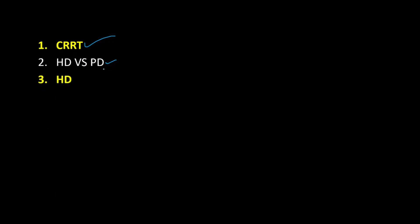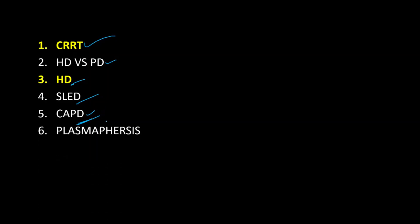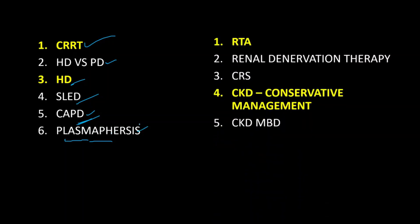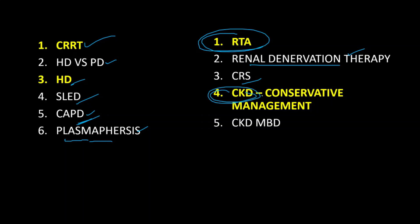Coming to dialysis-related questions: CRRT is asked multiple times. Hemodialysis versus peritoneal dialysis — merits and demerits — is important. Dialysis disequilibrium, slow low-efficiency dialysis (SLED), and CAPD are also asked. Plasmapheresis appeared in one particular university's fourth paper as a 10-mark question. Renal tubular acidosis is very important and has also appeared in the fourth paper.